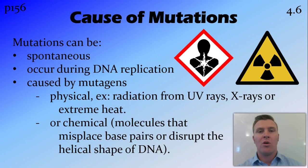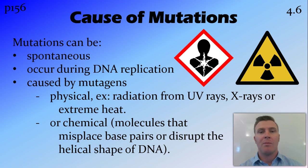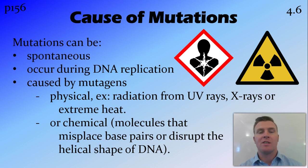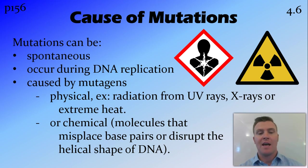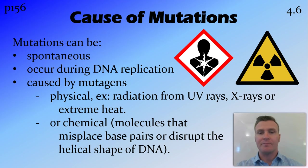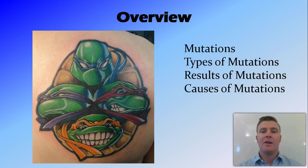Mutations can occur spontaneously — during transcription or replication — or they can be caused by mutagens. A mutagen is any substance that causes mutations. This could be a physical mutagen like radiation, UV rays, or X-rays, or a chemical mutagen that pulls DNA apart and bonds it back together incorrectly.